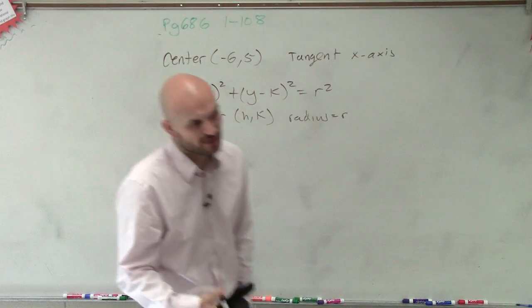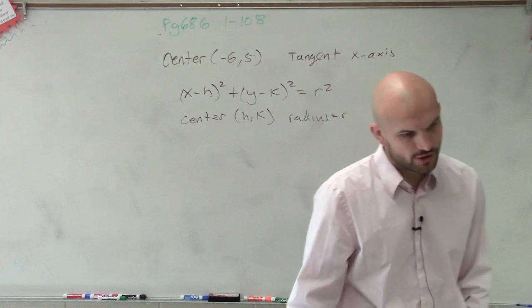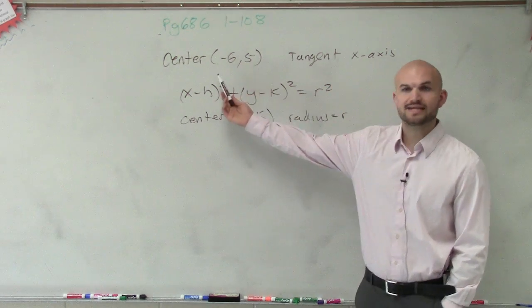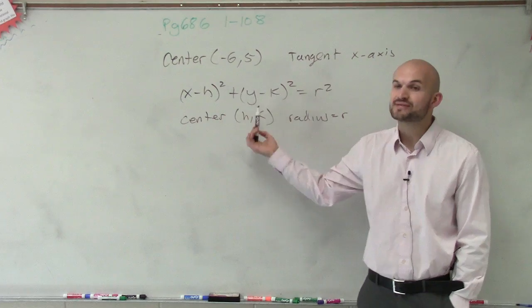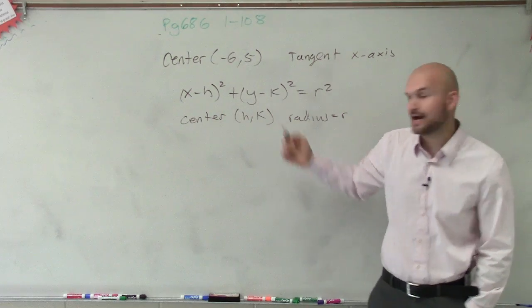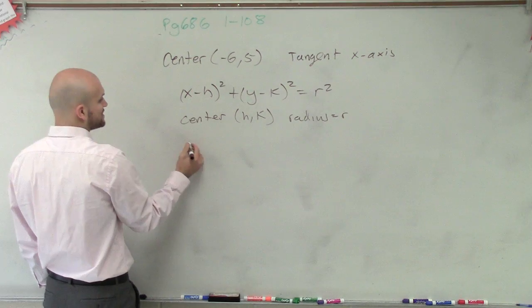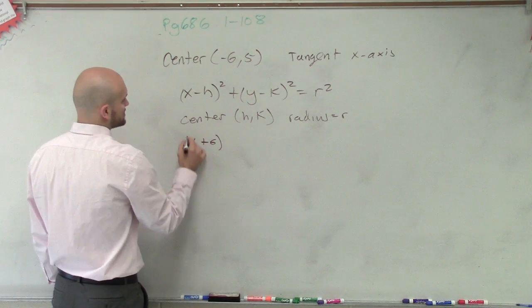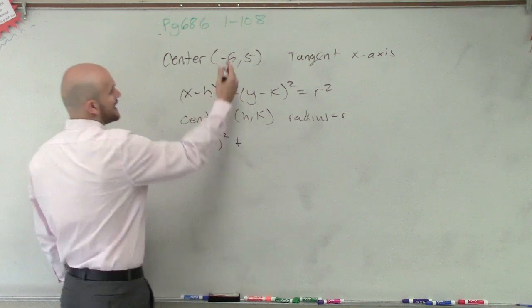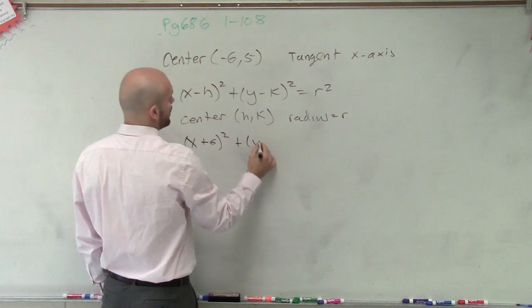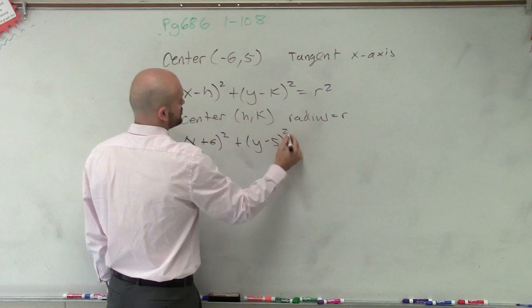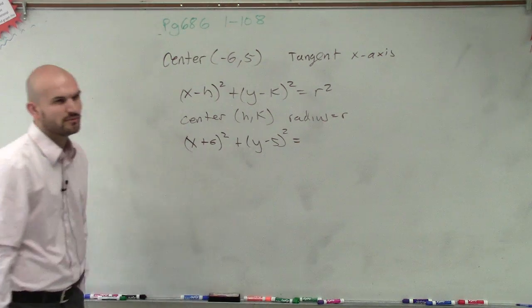So all they're asking us to do is to write the equation of the circle. Well, we know what the center is. And remember, it's x opposite of h and y opposite of k. So our equation here is going to be x opposite of negative 6. So it's going to be x plus 6 squared plus y opposite of 5, which is going to be y minus 5 squared equals. Now we've got to determine what r squared is.